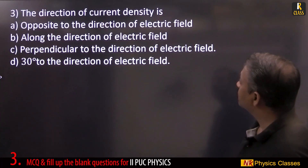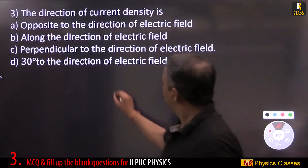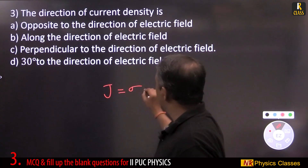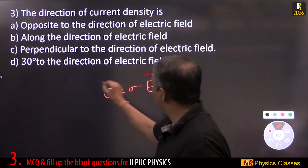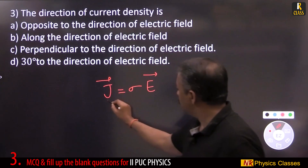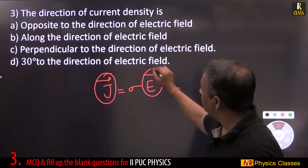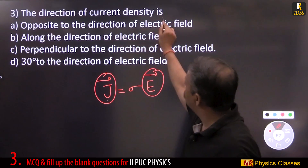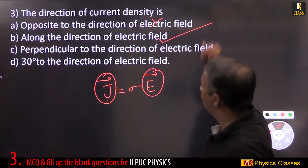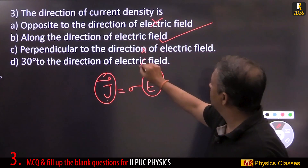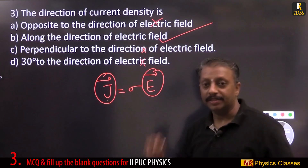The direction of current density: recall J = σE. The direction of current density is along the direction of the electric field — not opposite, not perpendicular. It is along the direction of the field.